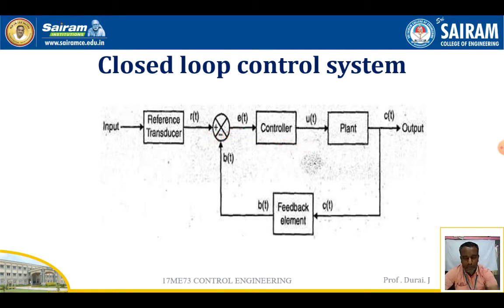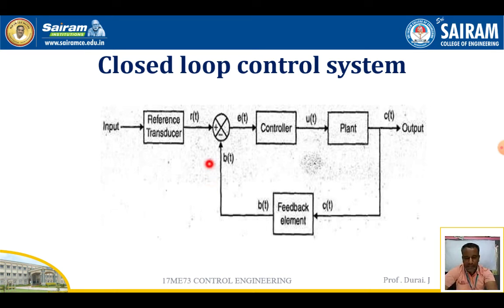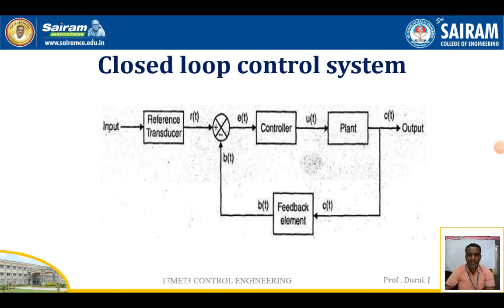The error signal, together with the reference system, gives the required input signal to the controller. The process continuously takes place and finally a constant output is obtained. In the closed-loop control system, r(t) is the reference input, c(t) is the controlled output, b(t) is the feedback signal, e(t) is the error signal, and u(t) is the actuating signal between the controller and the process.